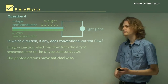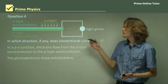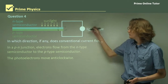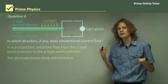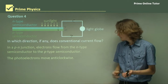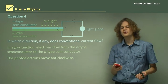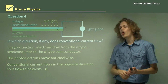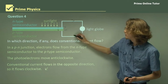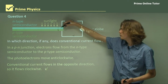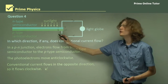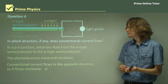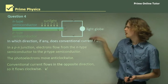In a p-n junction, electrons flow from the n-type semiconductor into the p-type semiconductor, so the photoelectrons move anti-clockwise. We can draw the direction of electron movement with little arrows. But conventional current doesn't flow in the same direction as electrons — it flows in the opposite direction, so it moves clockwise. We can see that in this circuit it's moving from the positively charged plate all the way around to the negatively charged plate, consistent with what we know of circuits: conventional current always moves from positive around to negative.